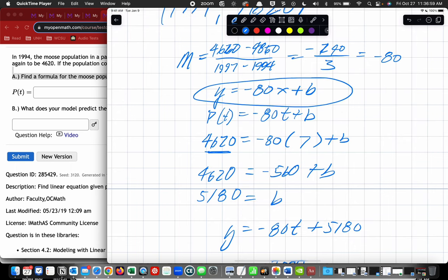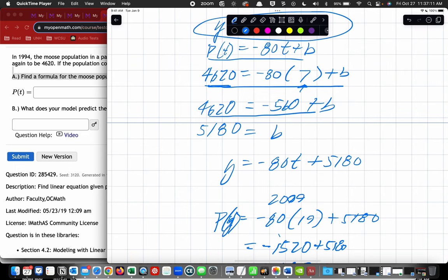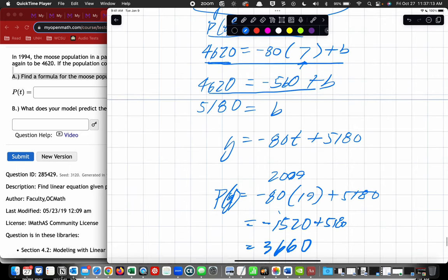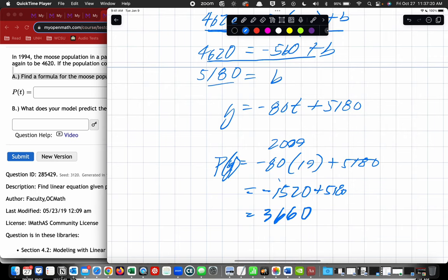I started out with this. That was me changing it to p of t and t. This is where I initially entered 1997, but then changed it to 7 to calculate negative 80 times 7 is negative 560. 4620, add 560 to both sides, get 5180.